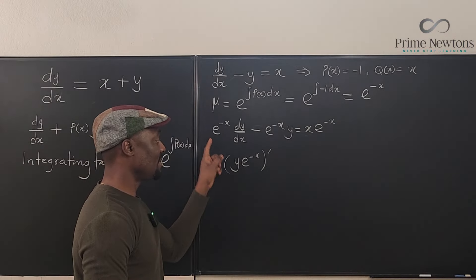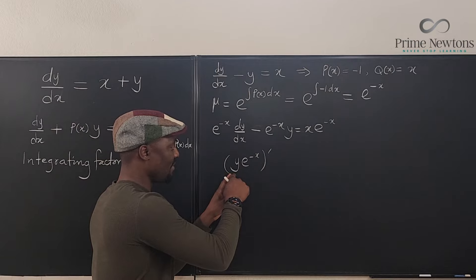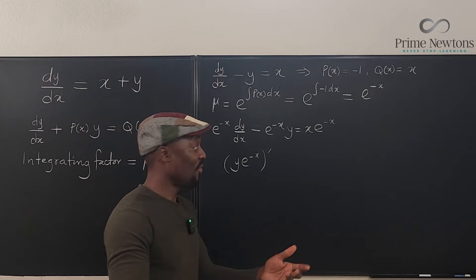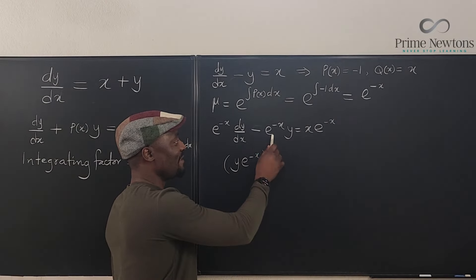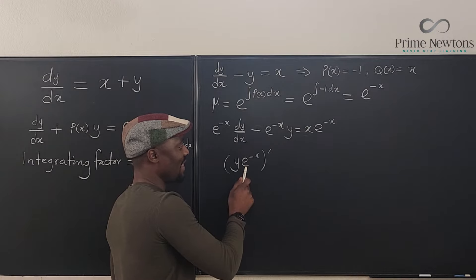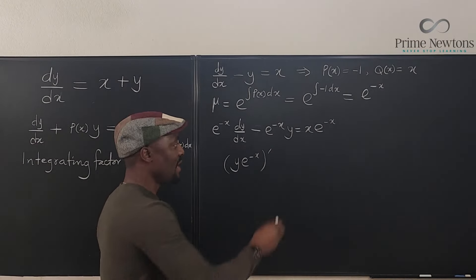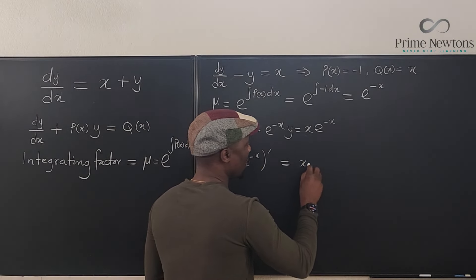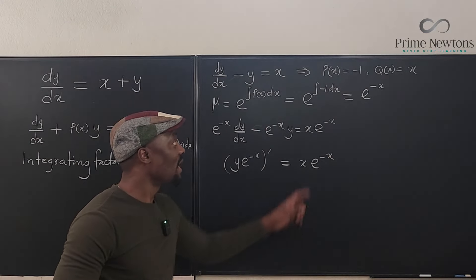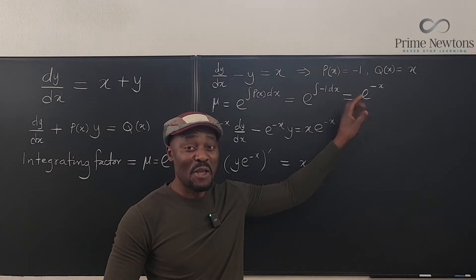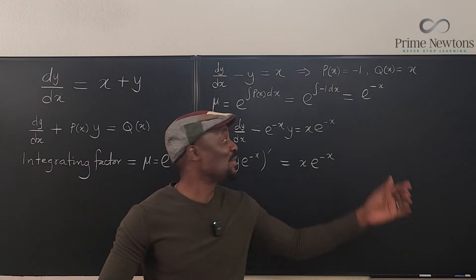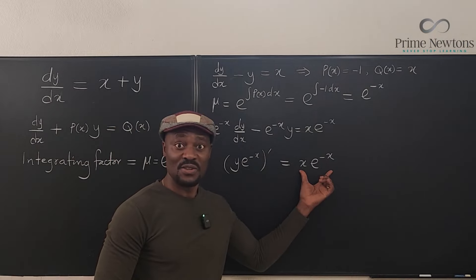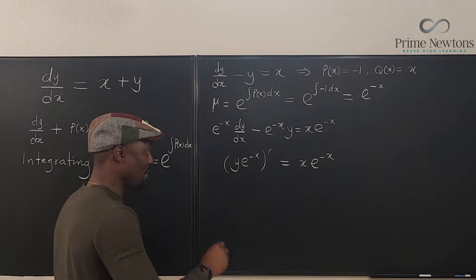That's why we call this the integrating factor — because once you get it, you don't need to do much extra work. You take it, use it to multiply, keep the left side as the derivative of y·e^(−x), and your work is just on the right-hand side. So now we have to integrate both sides. This left-hand side is the derivative of y·e^(−x), so integrating it just gives you y·e^(−x) — the integral sign cancels the d — and that equals the integral on the right-hand side.